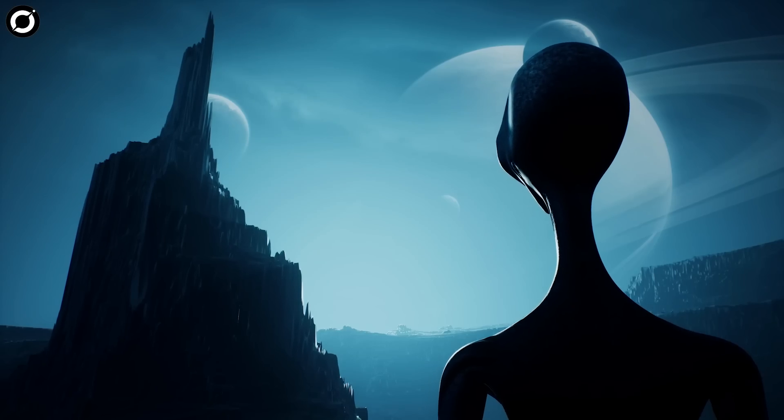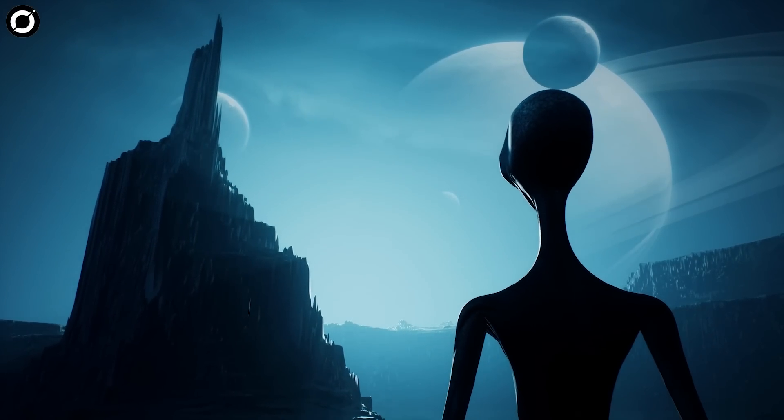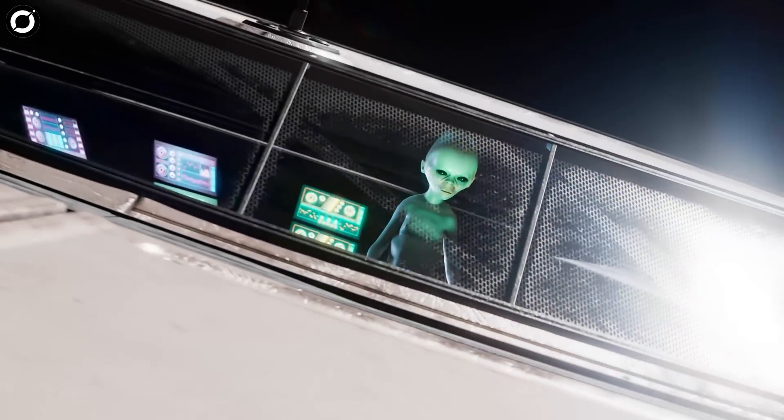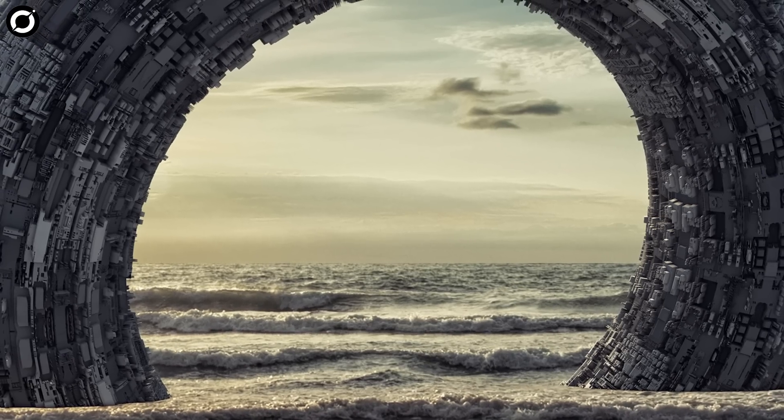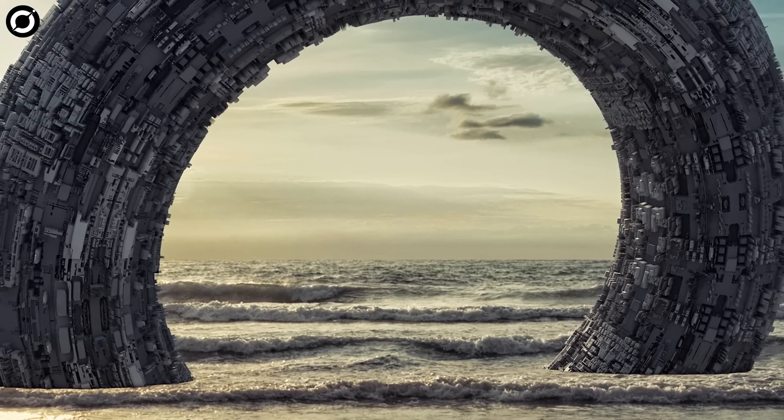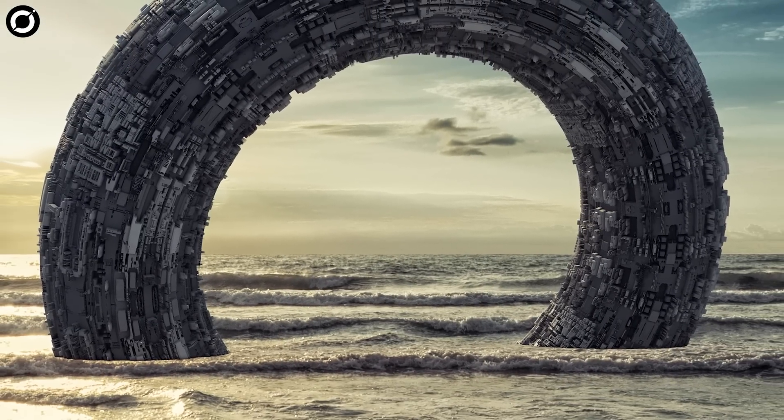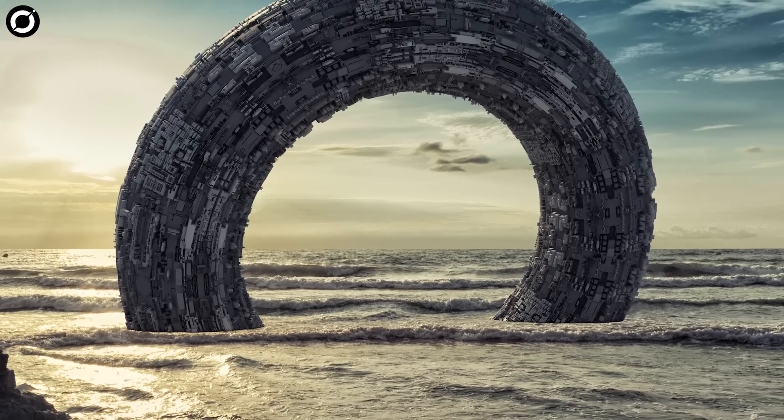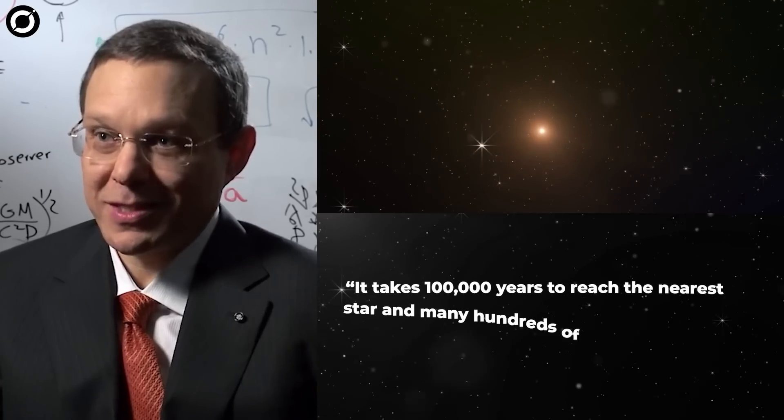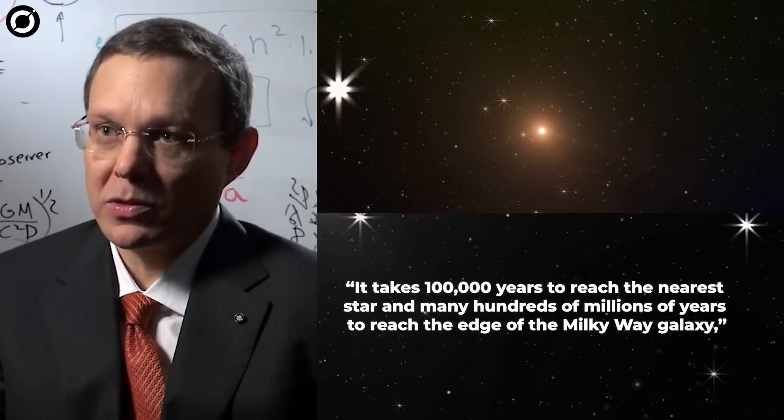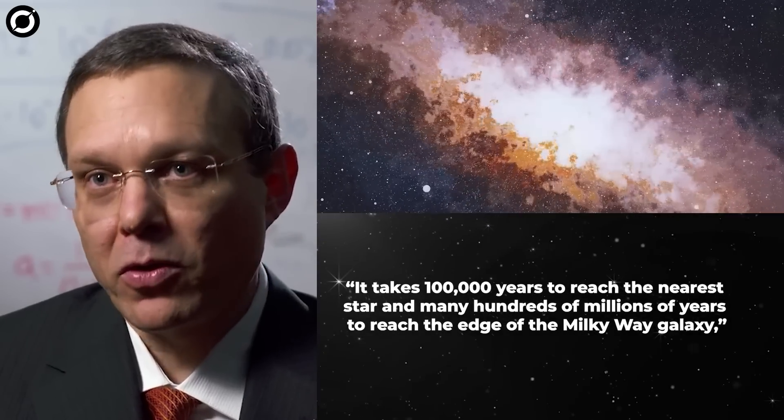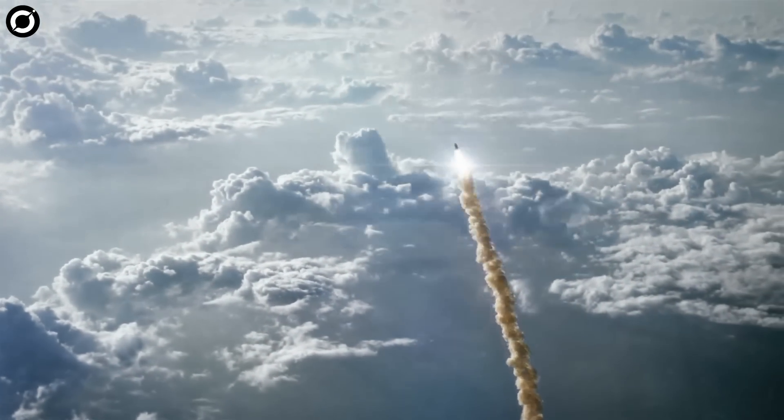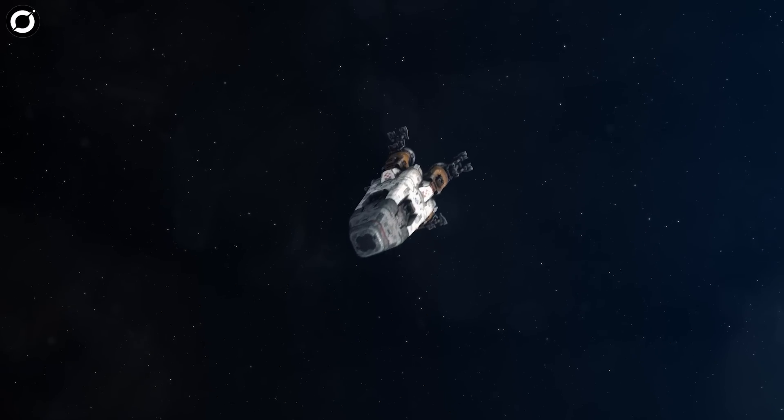While Loeb believes aliens exist or have existed somewhere in the universe, he doesn't think actual contact with biological creatures will happen. Instead, he argues UFOs, including objects like Oumuamua, are most likely alien probes powered by artificial intelligence, potentially even surviving relics of long dead civilizations. It takes 100,000 years to reach the nearest star, and many hundreds of millions of years to reach the edge of the Milky Way galaxy. So it makes much more sense to send systems with artificial intelligence that are not so sensitive to the hazardous conditions of space.